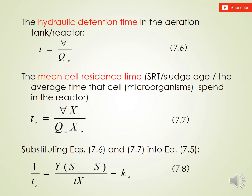Continuing with the design equations: the hydraulic detention time in the aeration tank is T = V / Q₀. The mean cell residence time — also called sludge retention time or sludge age — is the average time the microorganisms spend in the reactor, denoted T_C. Substituting equations 7.6 and 7.7 into equation 7.5 gives us equation 7.8, which is also one of the most important equations in the design of activated sludge systems.